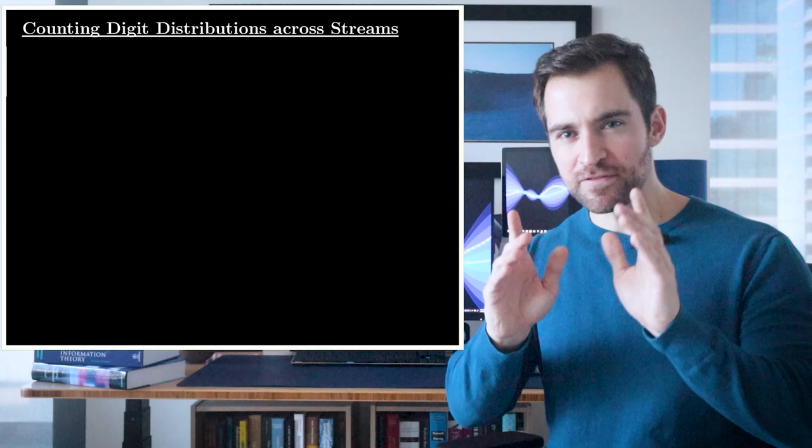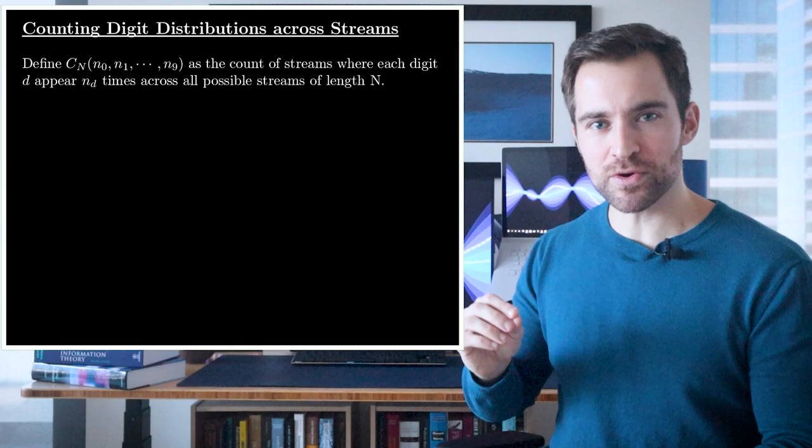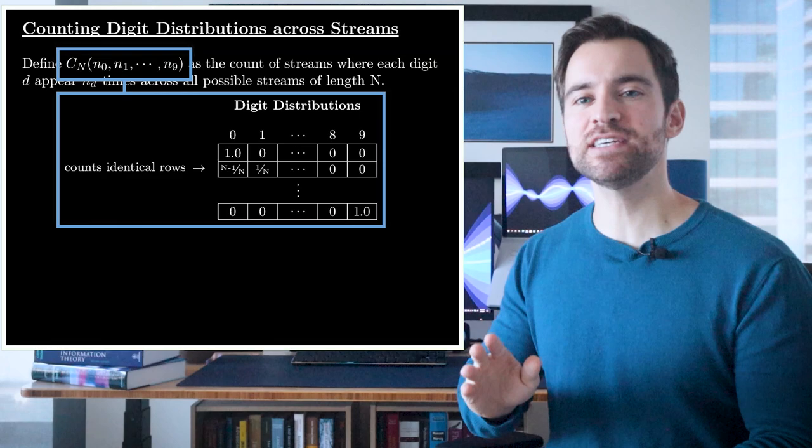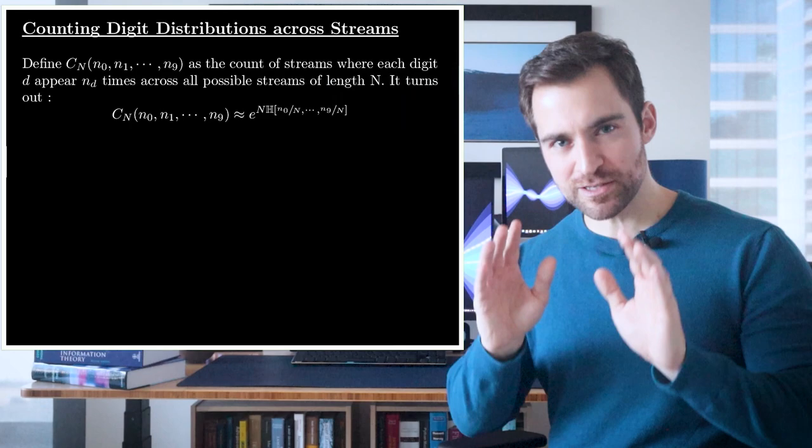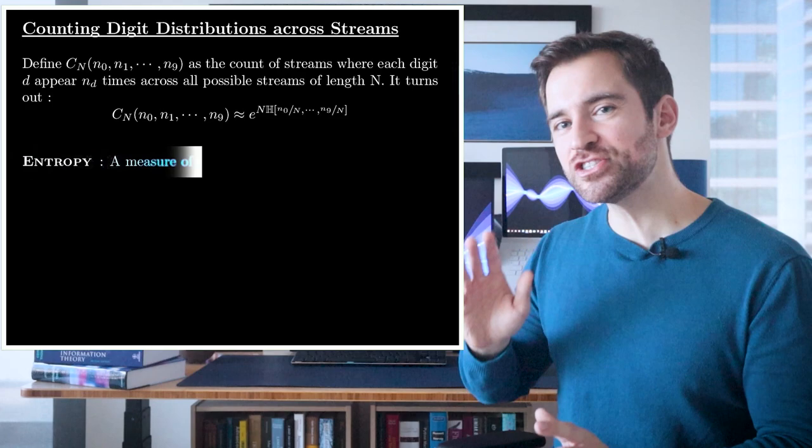That provides the rough intuition, but let's quantify this idea. Let's define a function C which will count the number of streams which have a given count of digits. In other words, it counts up identical rows from this table. Clearly, this thing will tell us which distributions are more or less frequent. Now, here's the interesting part. This function is well approximated by a simple expression involving the distribution's entropy.